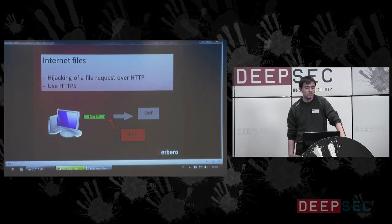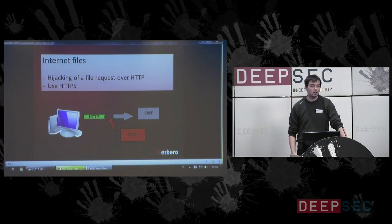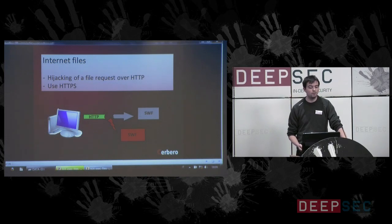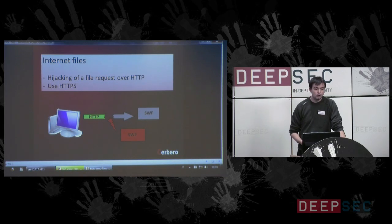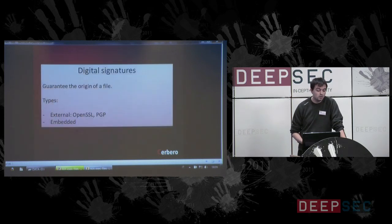Internet files: it is possible to hijack a request over HTTP. A malicious Flash file could be served instead of the originally requested one. A solution is to use HTTPS with a whitelist of certificates, and maybe enforce it for certain file types, or enforce it always.